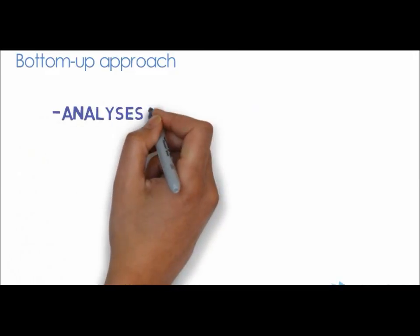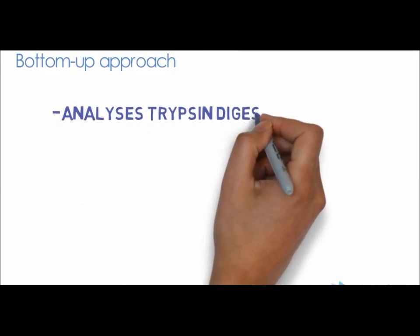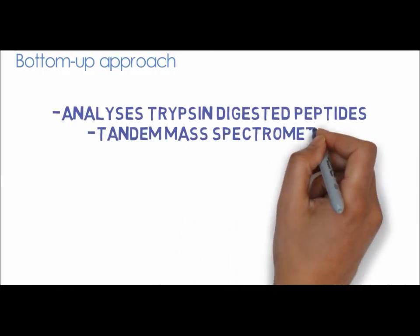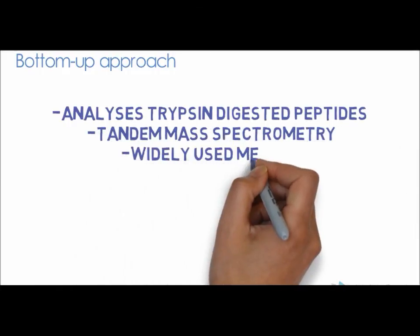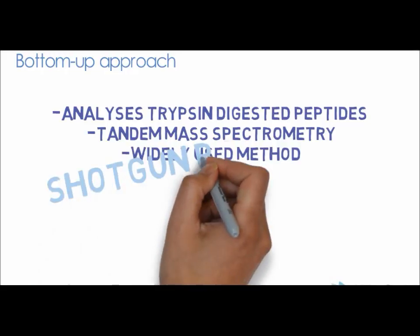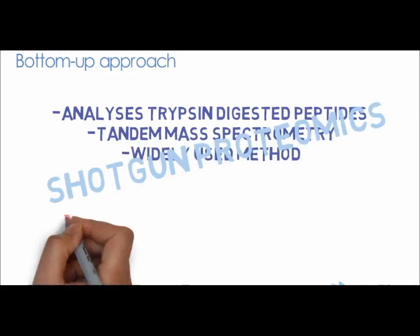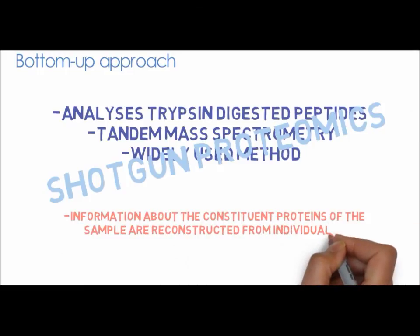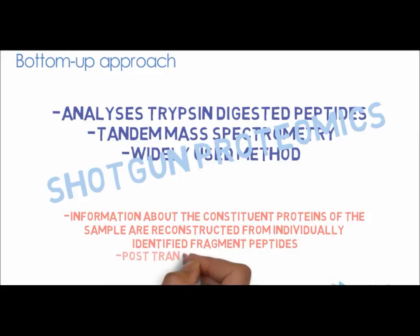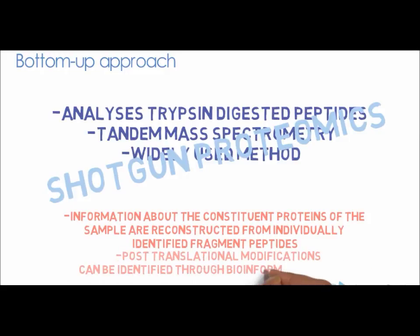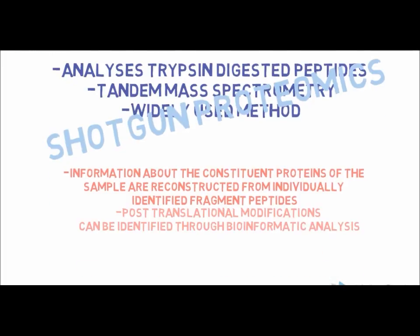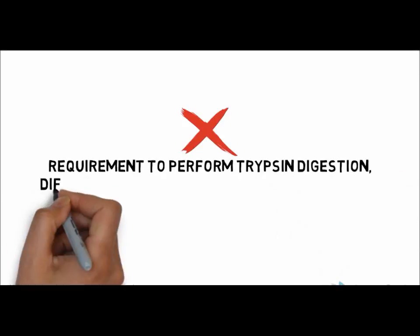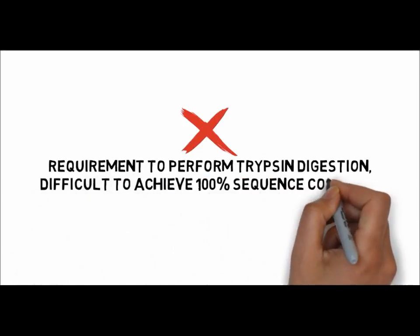In contrast, the bottom-up approach uses proteolytically digested protein peptides prior to analysis by tandem mass spectrometry. It is the current method of choice for most proteomic studies, and this technique is otherwise known as shotgun proteomics. Information about the constituent proteins of the sample are reconstructed from individually identified fragment peptides, and post-translational modifications can be identified through bioinformatics analysis. However, the downside of this approach is that peptides formed from digestion with trypsin might be too short for robust characterization.